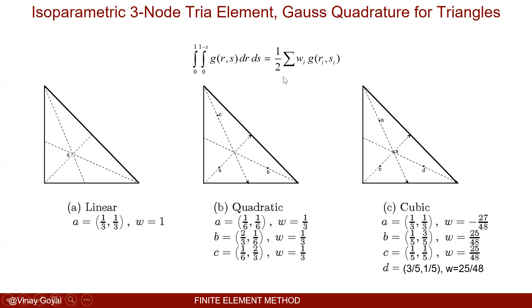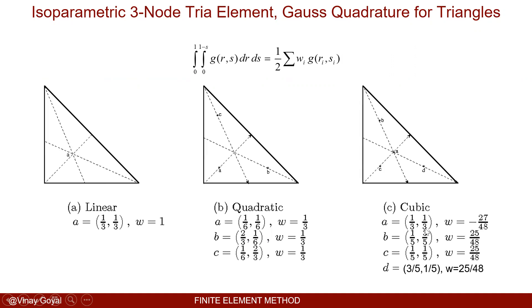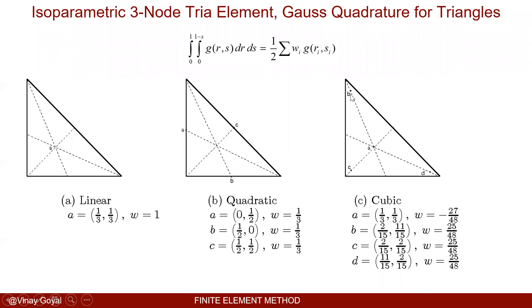There's another approach where the sampling points can be placed at the edges of the triangle, with weight factors of one-third. These are the locations where you sample. For a cubic formulation, similar sampling points apply but located at different positions within or on the triangle.